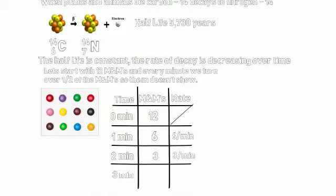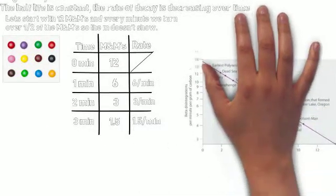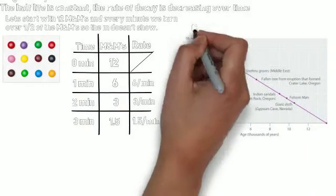In the 3rd minute, we have 1½ remaining. So we've turned over 1½ per minute during that minute. Now, that is the rate of the M&M decay.